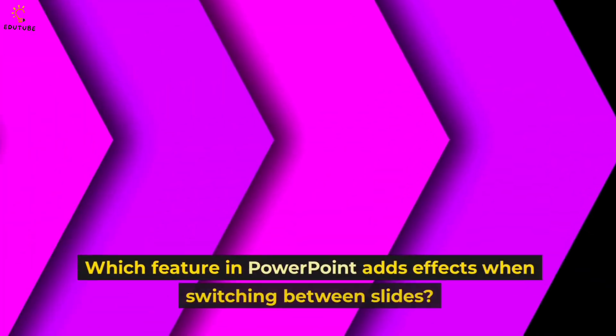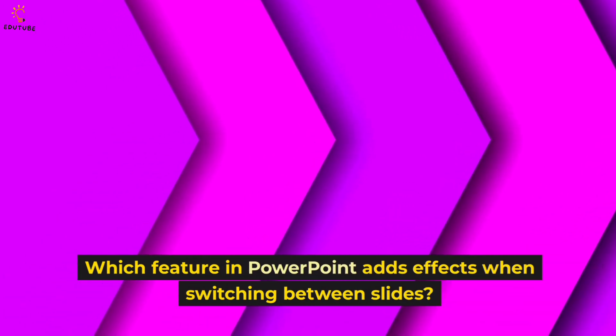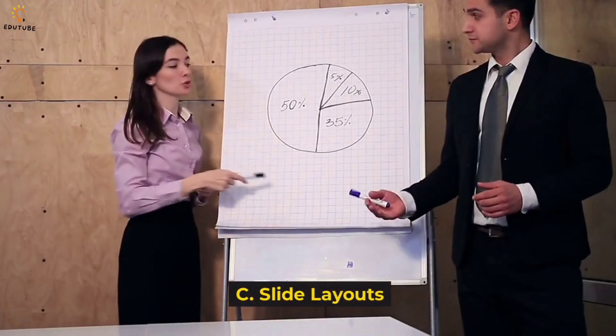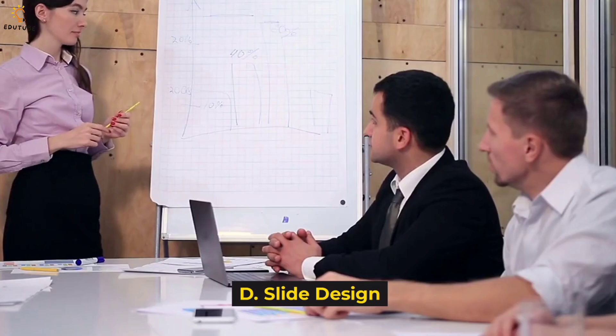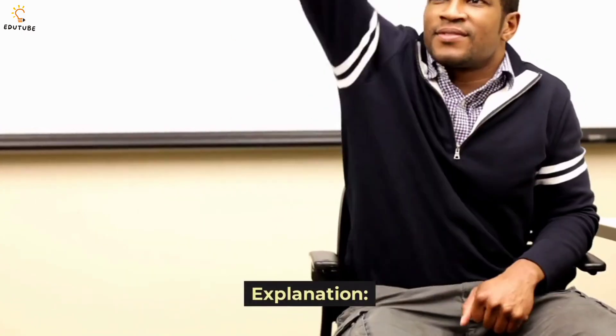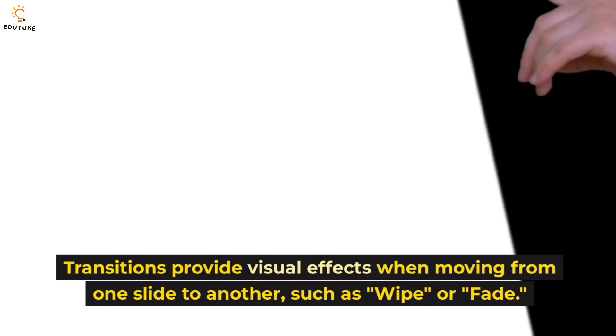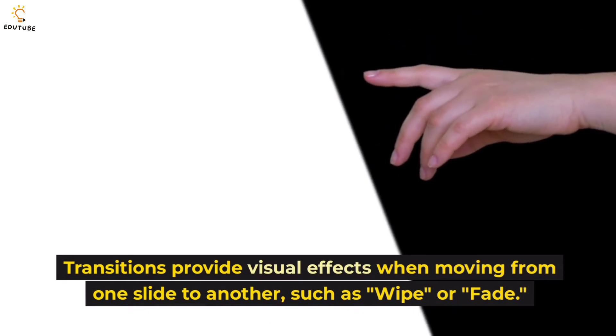Question 25: Which feature in PowerPoint adds effects when switching between slides? A. Animations, B. Transitions, C. Slide layouts, D. Slide design. Answer: B, transitions. Explanation: Transitions provide visual effects when moving from one slide to another, such as wipe or fade.